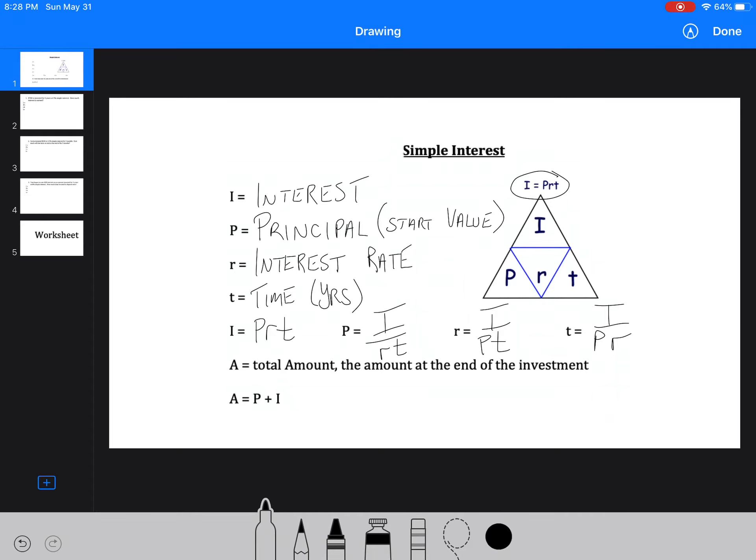And any letters that are side by side, you're just multiplying them together. Now, our total amount is always going to be our principal, what we started with, plus our interest. So that's just another formula we need to look at.